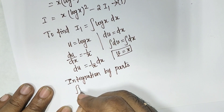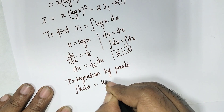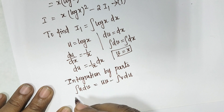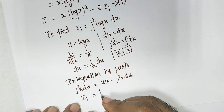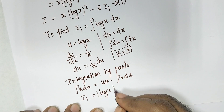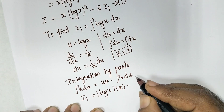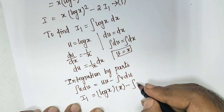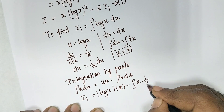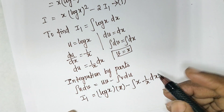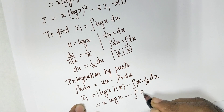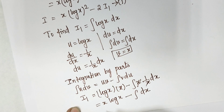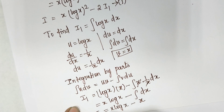Applying integration by parts for I1: integral u·dv equals u·v minus integral v·du. So I1 equals log(x)·x minus integral of x·(1/x)·dx. The x terms cancel, and integrating dx gives x. So I1 equals x·log(x) minus x.